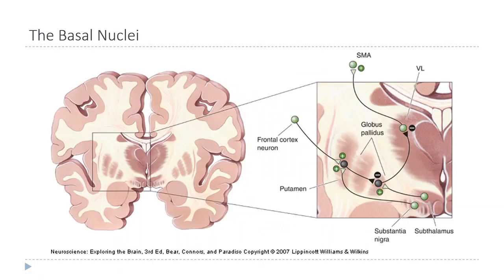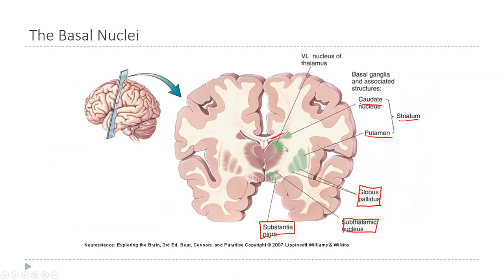The way these structures are connected looks like this in a simplified diagram. The caudate and putamen together form the main input to the basal nuclei, receiving excitatory inputs from the frontal cortex. Those neurons are primarily inhibitory — they express GABA as a neurotransmitter — and synapse onto neurons in the globus pallidus. The pathway goes: cortex to putamen, putamen to globus pallidus, and globus pallidus — via another inhibitory projection — to the ventral lateral nucleus of the thalamus.